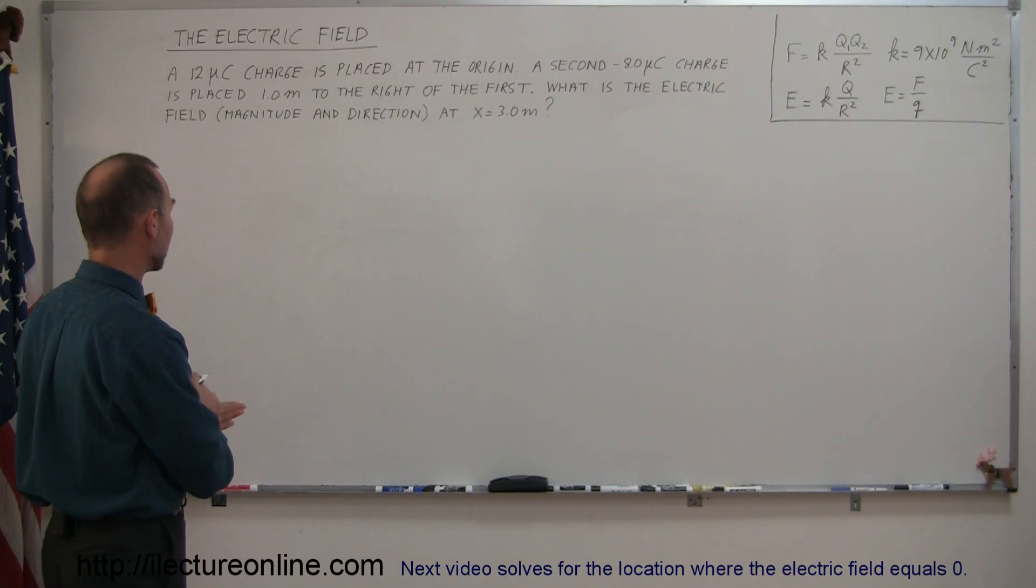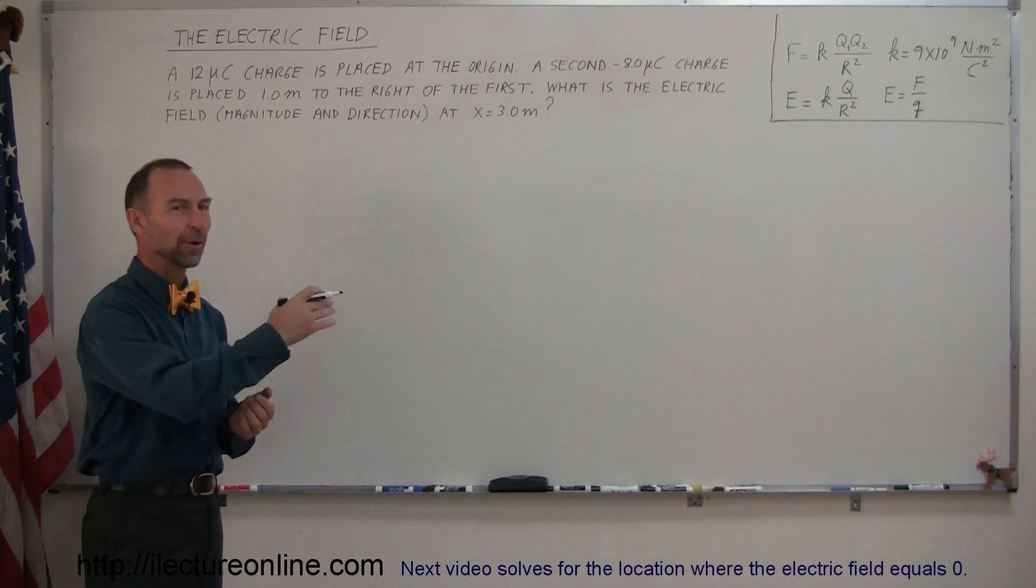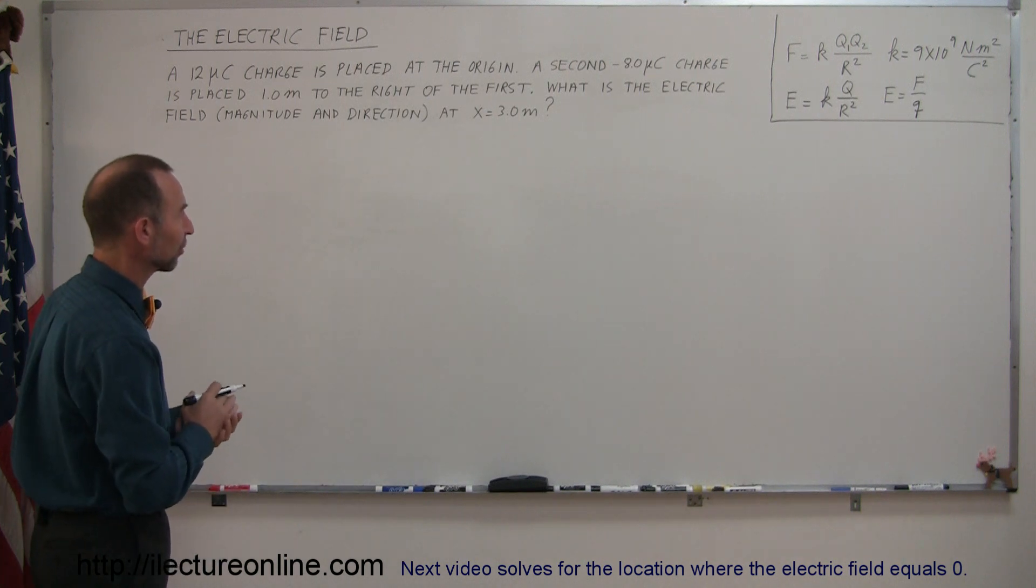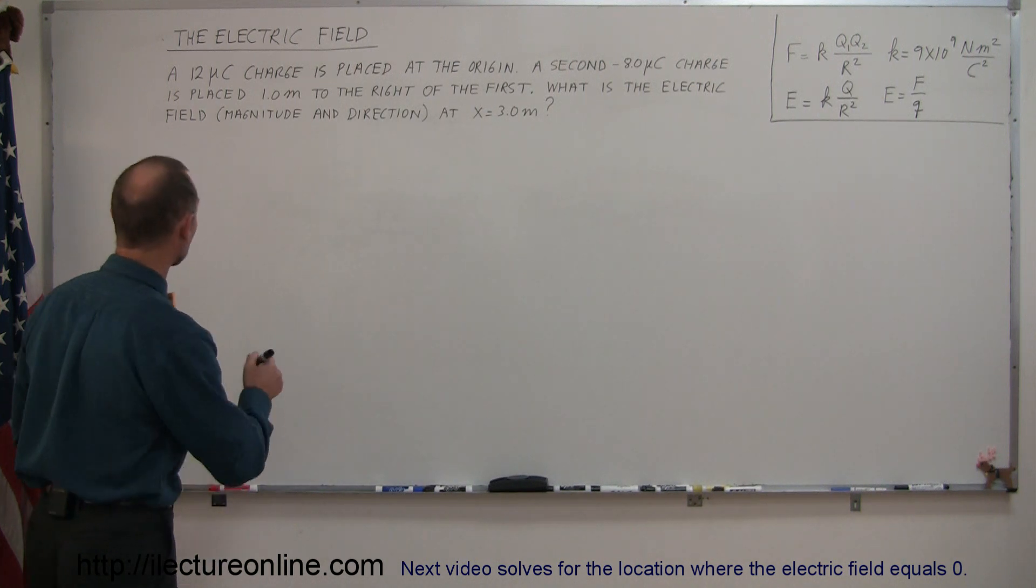They're asking us to find the electric field, both magnitude and direction, at location x equals three meters, to the right of both charges. Let's make a diagram to show what that looks like.